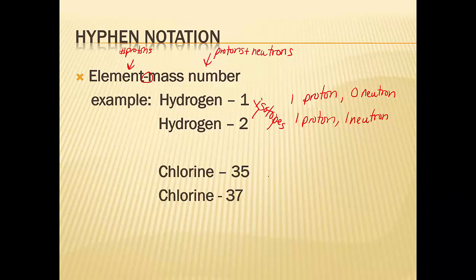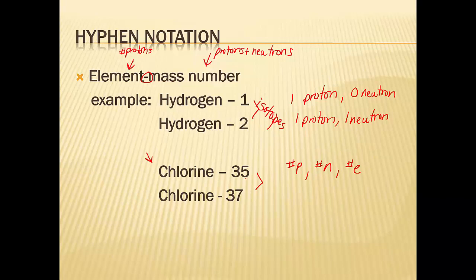Another isotope of chlorine. Use your periodic table — how many protons does chlorine have? Chlorine is element number 17, I believe — you check me if I'm wrong. You guys finish this one: go find your periodic table and tell me how many protons, how many neutrons, and how many electrons are in both of these isotopes of chlorine. No charges, so you're assuming it's neutral. We will see you tomorrow.